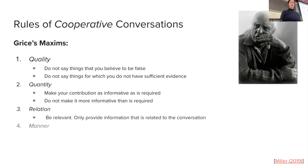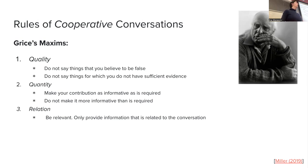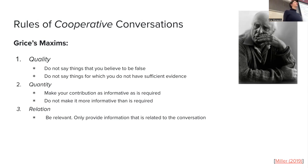We have the maxim of relation: be relevant, only provide information that's related to the conversation. What I noticed when I played around with any model for the humor explanation task is that it will mention some information that's kind of related to the punchline, but then kind of misses the punchline. Or even if it mentions why something is really funny, it mentions all these extra things where you're like, 'Come on, come to the point.' I think this is still a big issue for a lot of language models.